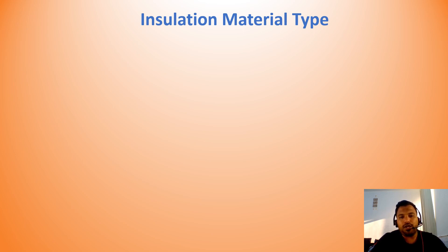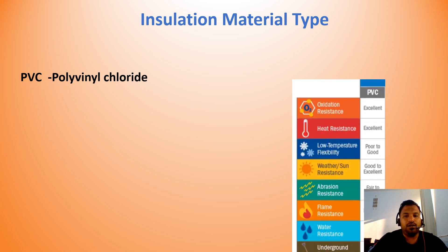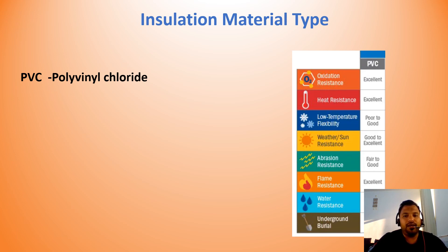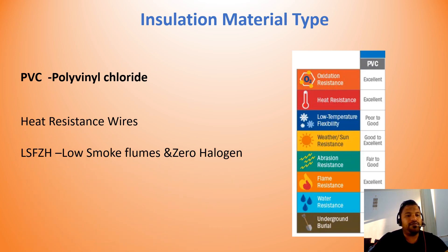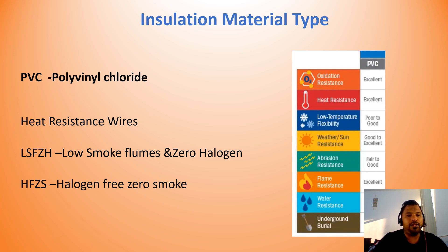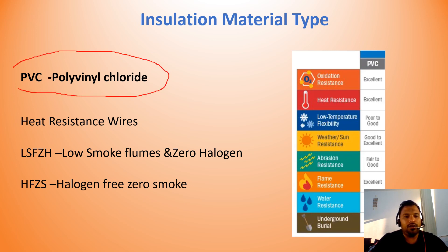The second element while selecting wires is insulation material. The material should be PVC — polyvinyl chloride — which has good properties like high oxidation resistance, excellent heat resistance, and excellent flame resistance. In the market, you will also see heat resistance wires, LSF-ZH (low smoke fumes and zero halogen), and HF-ZH (halogen free, zero smoke). These are all PVC-based wires with enhanced properties.